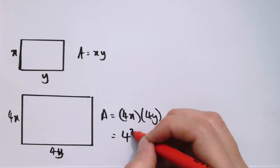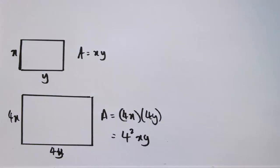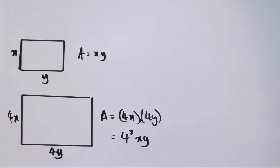So that would give us 4 times 4, or 4 squared times xy. That is, the area of the larger rectangle is 4 squared times the area of the smaller rectangle.